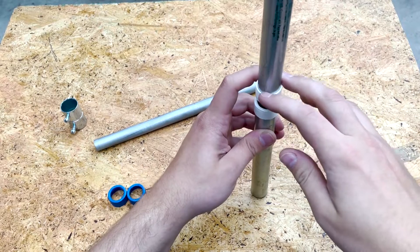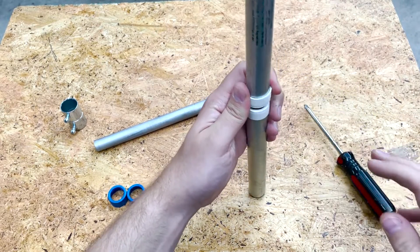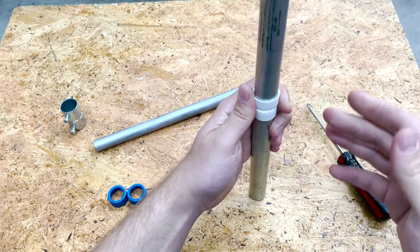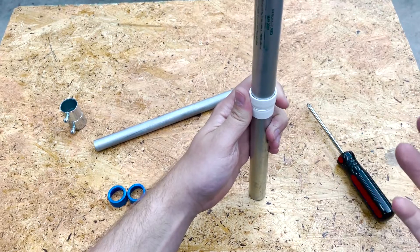But unlike Mark, Haiyan didn't need this to be necessarily a secure joint. So they didn't have to use a coupling or anything like that.